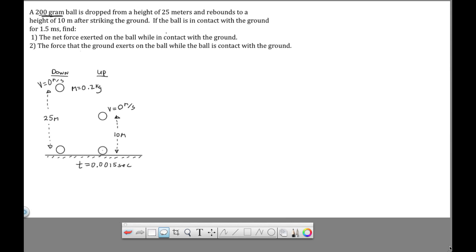Okay, so here we have a ball dropped from a height of 25 meters. It hits the ground. The time of contact between the ball and the ground is 1.5 milliseconds, which we want to convert to seconds, 0.0015 seconds. And then the ball rebounds to a height of 10 meters. And from this information, we're asked to determine the net force exerted on the ball while in contact with the ground.